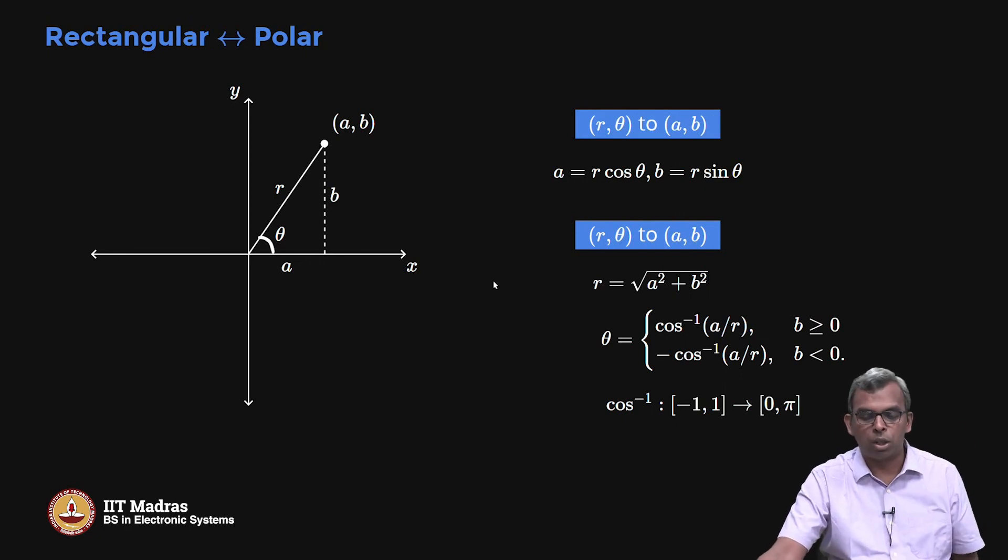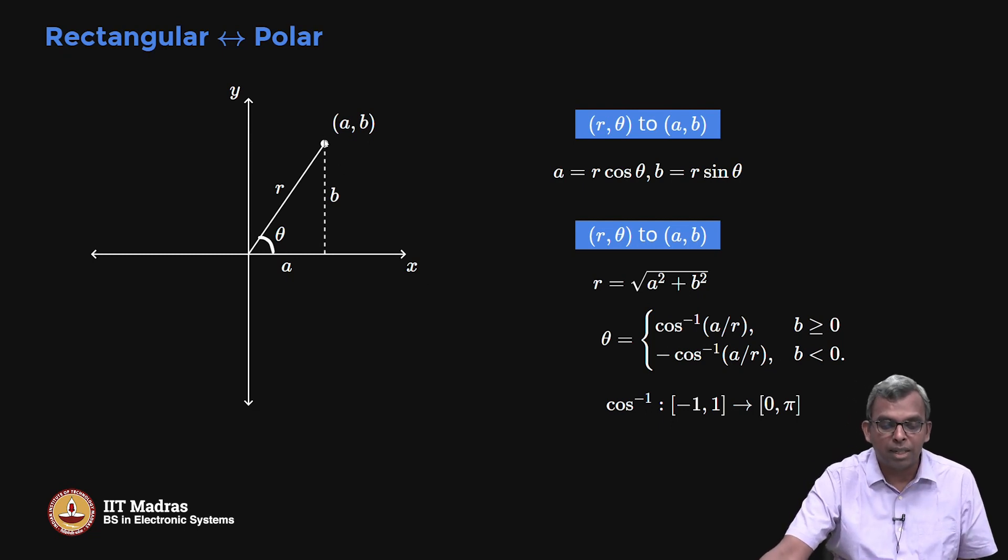Let me summarize, rectangular to polar conversion. r θ to a, b is very easy: a is r cos θ, b is r sin θ. Now a, b to r θ also is quite easy. r is root of a squared plus b squared. Now θ, there is this thing about whether b is positive or not. If b is positive, then I know my θ is going to be between 0 and π. I can work with the cos inverse very nicely. So I have cos inverse of a by r, and then for b is greater than or equal to 0. On the other hand, if b is less than 0, my θ is going to go from minus π to 0. So that ends up being minus cos inverse of a by r. So you can see clearly for the same a, if b is negative, b is on this side, then θ is minus of cos a by r.